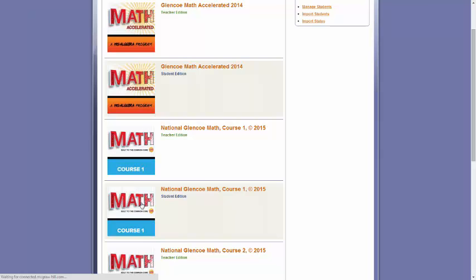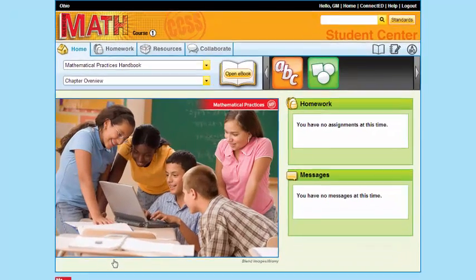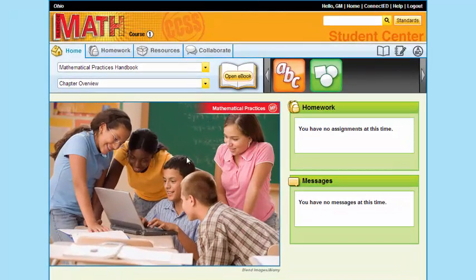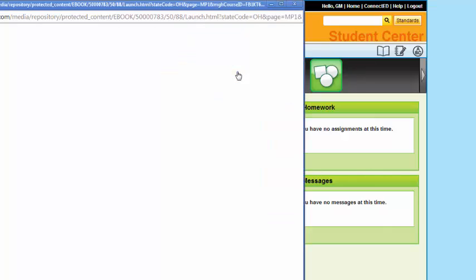I'm going to go to my student edition, and I know I'm in my student edition because my tabs are now Home, Resource, Homework, and Collaborate. Then I'm going to open the e-book.